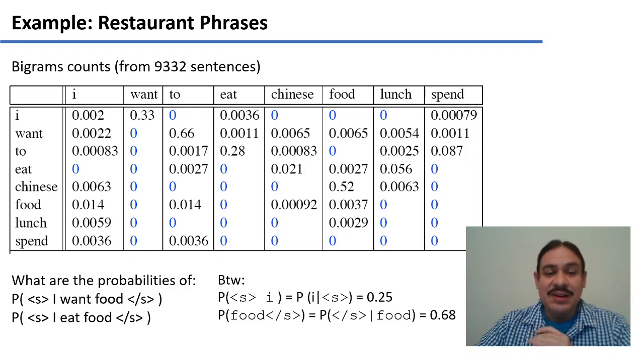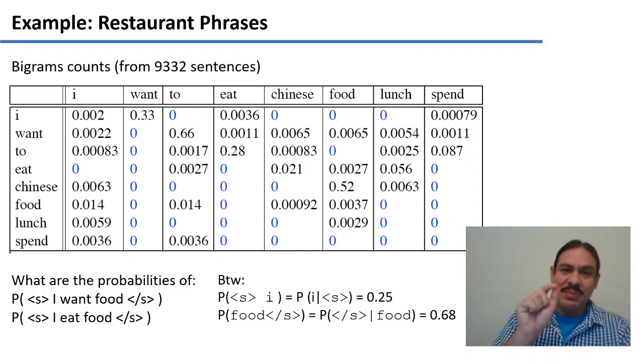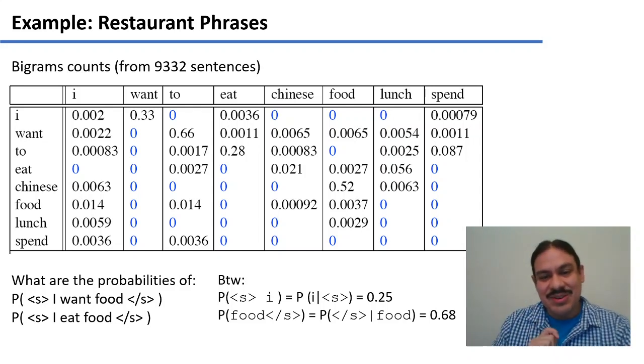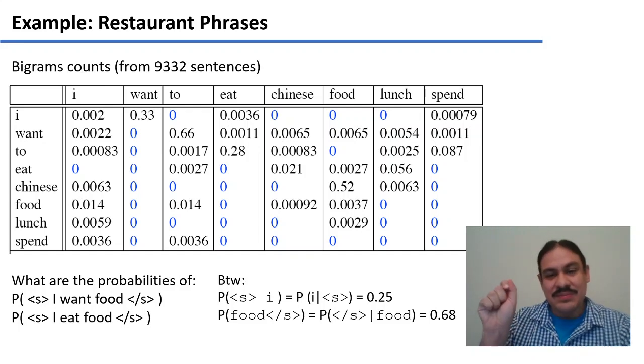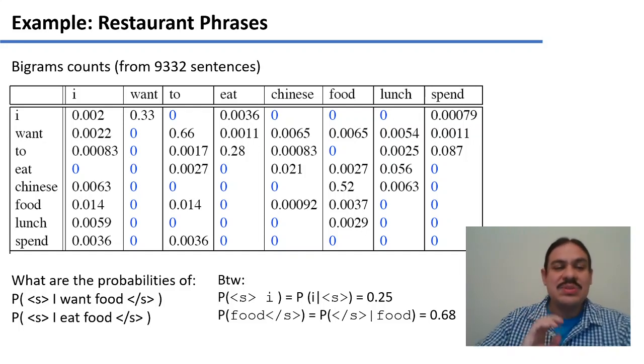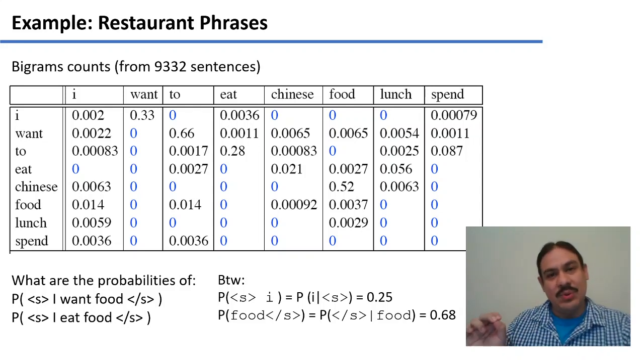The probability of the bigram start of the sentence I, which is the probability of the word I given the start of a sentence, is 0.25. And the probability of the bigram food end of sentence, which is the probability of the end of sentence given food. So with those numbers, please use the chain of probability rule to calculate the probability of the sentence I want food and I eat food.